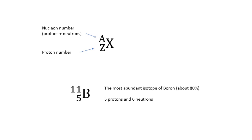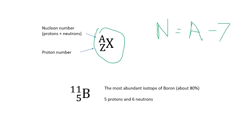We use this notation for a particular isotope: the number at the top is the nucleon number A — the number of particles in the nucleus, i.e. protons plus neutrons. The number at the bottom is the proton number Z — just the number of protons. There's also the neutron number, which is the nucleon number minus the proton number. For example, about 80% of boron is boron-11 with Z=5, meaning it has five protons and six neutrons.